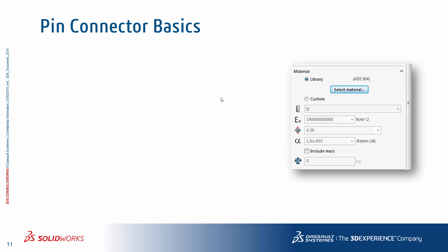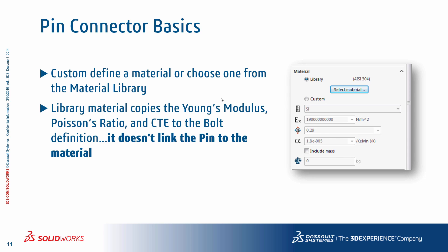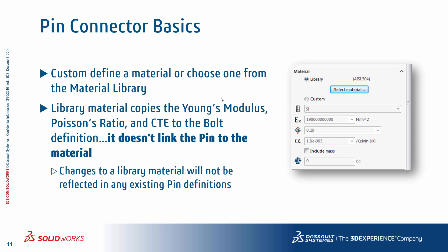When the strength data option is selected, the program requires material properties that can be custom defined or selected from a library. If a library material is selected, the program copies properties such as Young's modulus, Poisson's ratio, and the coefficient of thermal expansion. Keep in mind that these properties are simply written in and will not change if the material properties in the library change. The pin definition is not linked back to the material in the library, meaning you will have to re-read the material if you make any changes to the material in the database.